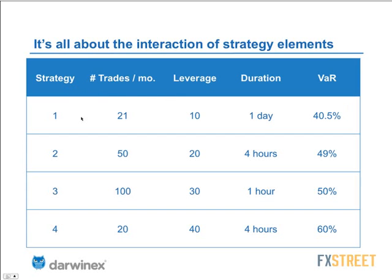Consider a strategy that places one trade per day — 21 trades a month — with a leverage of 10 to 1, and holds each trade for one day. In the worst month every 20, that strategy could lose about 40% of its capital. If we took another strategy that places about two and a half times the number of trades, uses twice the leverage, but stays in the market for only four hours instead of one day — that's a comparable way to get to the same value at risk with completely different strategies.